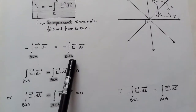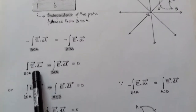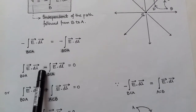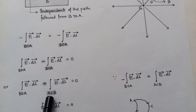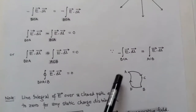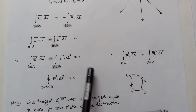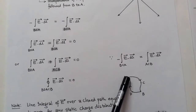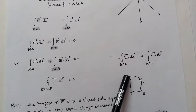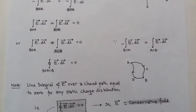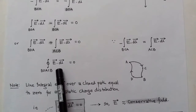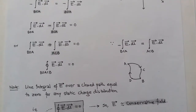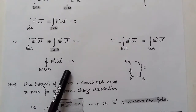Now we move the integration for BDA to the left side. It becomes positive, and the path for BDA becomes ACBDA. For path BDA with a negative sign, we can write it as the opposite path ACB with a positive sign. These two integrations form a closed path: the BDA integration plus the ACB integration equals zero. So the closed line integral of E dot dL is equal to 0.